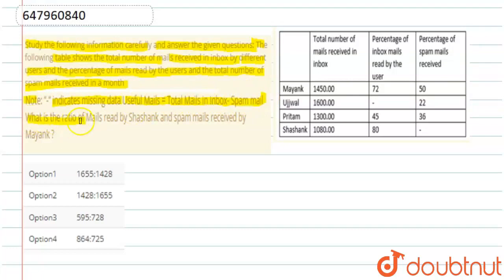Now, what is the ratio of mail read by Sasank and spam mail received by Mayank? We have to find the ratio involving Mayank, Pritam and Sasank. So first of all, we will start with Sasank.